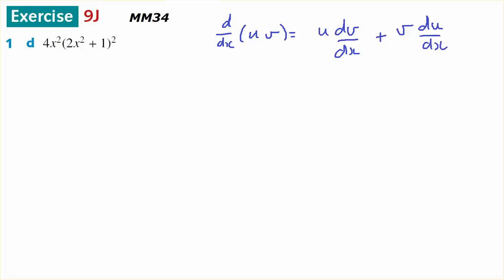This is for Year 12 Methods. It comes out of Chapter 9. It's 9j, 1d, which is the product rule.